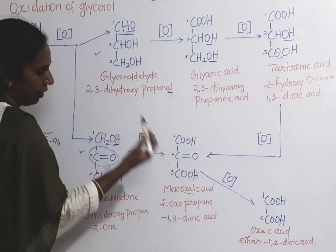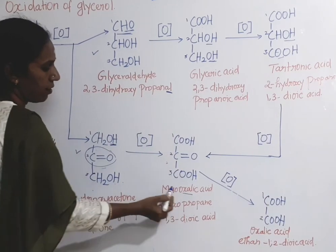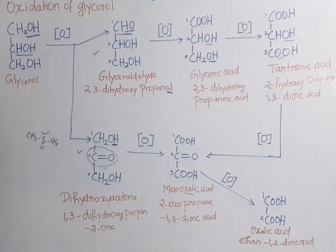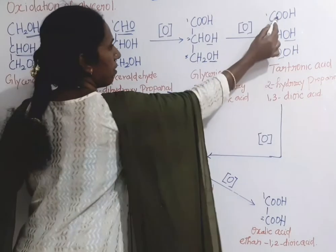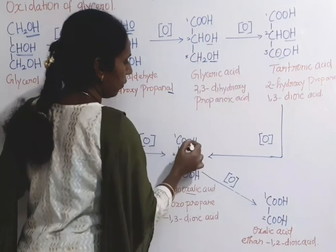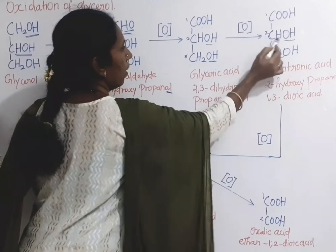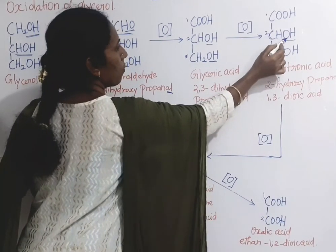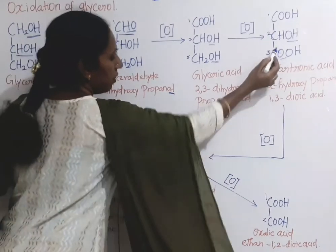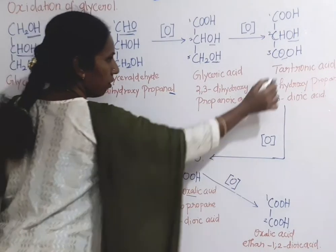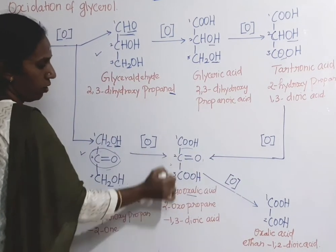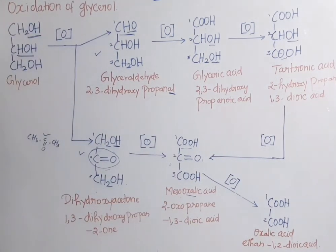In tartronic acid, the first carbon is an acid group, the second carbon is an alcoholic group which undergoes oxidation to form a keto group, and the third carbon is an acid group. So tartronic acid also gives the same product by oxidation — mesoxalic acid.